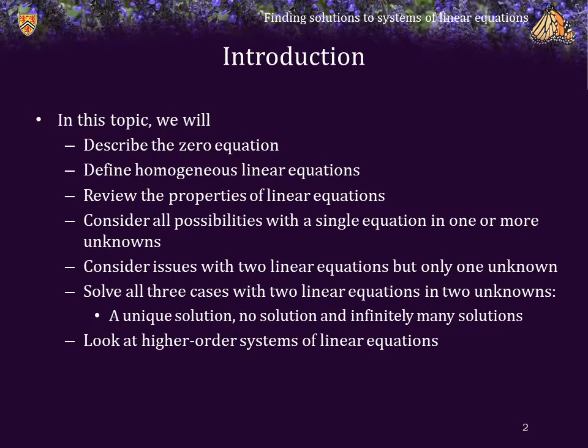In this topic, we will begin by describing the zero equation. We will define homogeneous linear equations. We will review the properties of linear equations. We will consider all possibilities with a single equation in one or more unknowns. We will consider issues when there are two linear equations but only one unknown. We will then solve all three cases with two linear equations in two unknowns, including a unique solution, no solution, and infinitely many solutions. We will also look at higher order systems of linear equations and foreshadow what we will be looking at in subsequent topics.